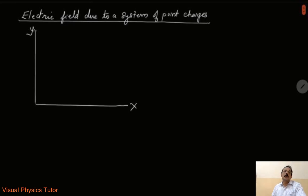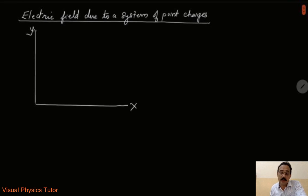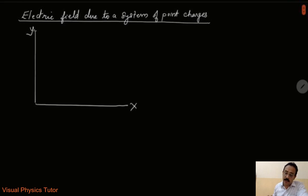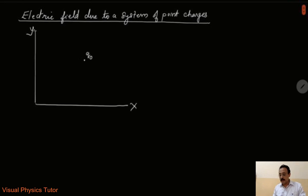Hello dear students, today we will be learning about the electric field due to a system of point charges. So what we have to do here, we have to consider an xy plane and let me consider a test charge q naught to be at a distance of r vector from the origin.